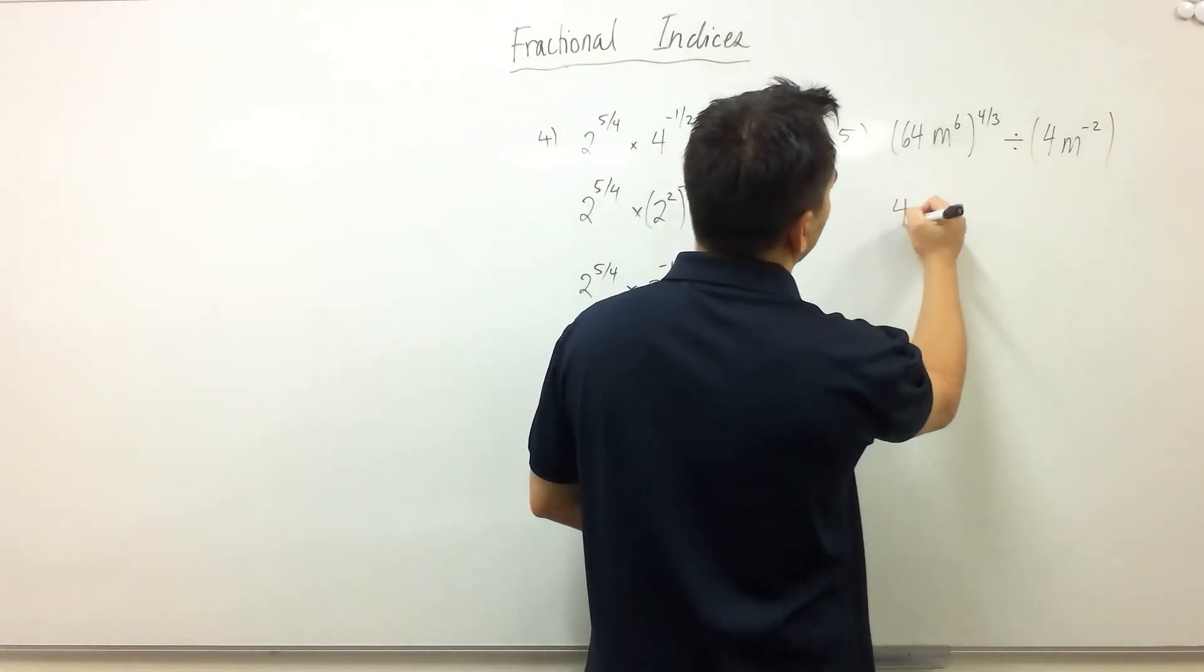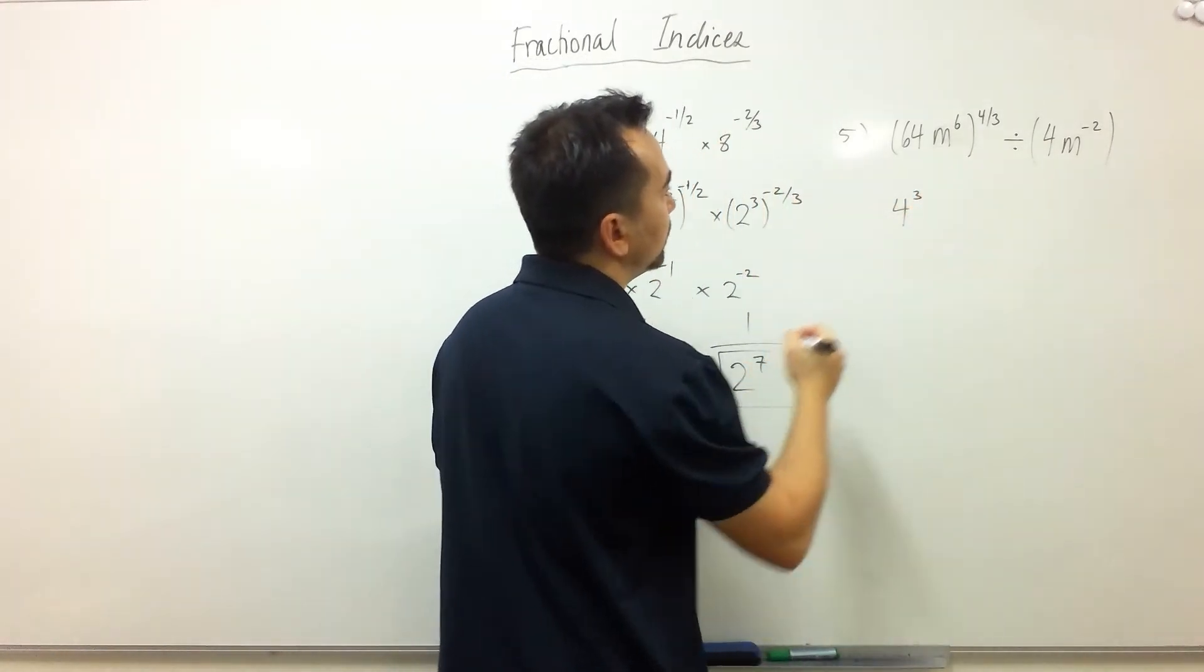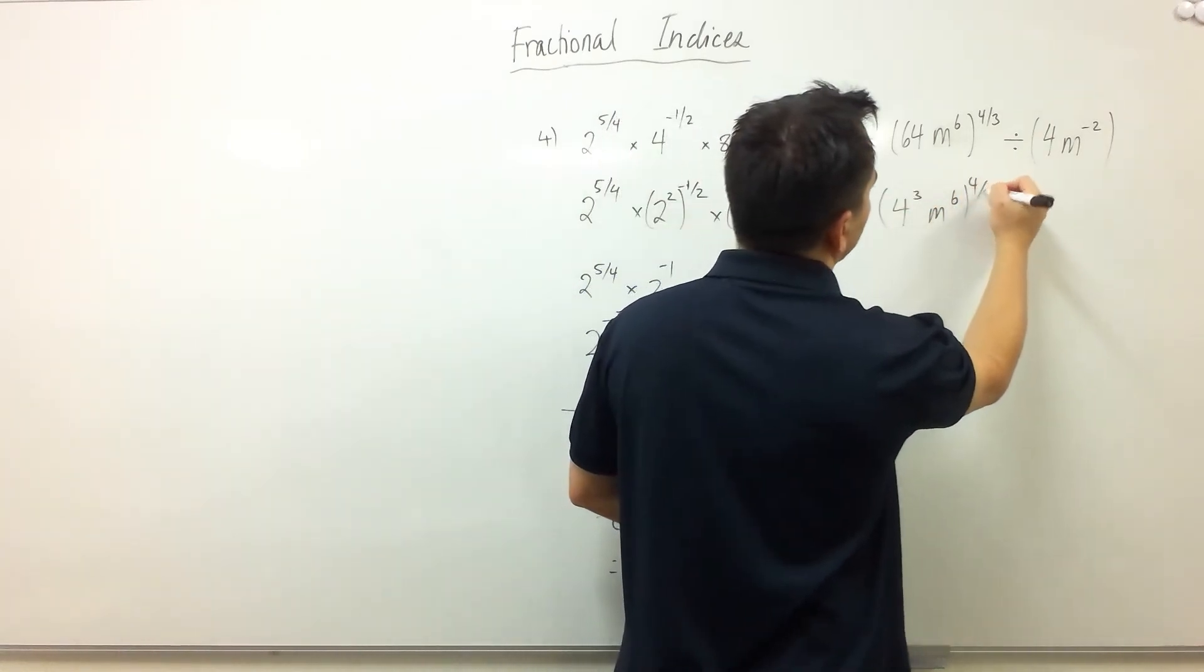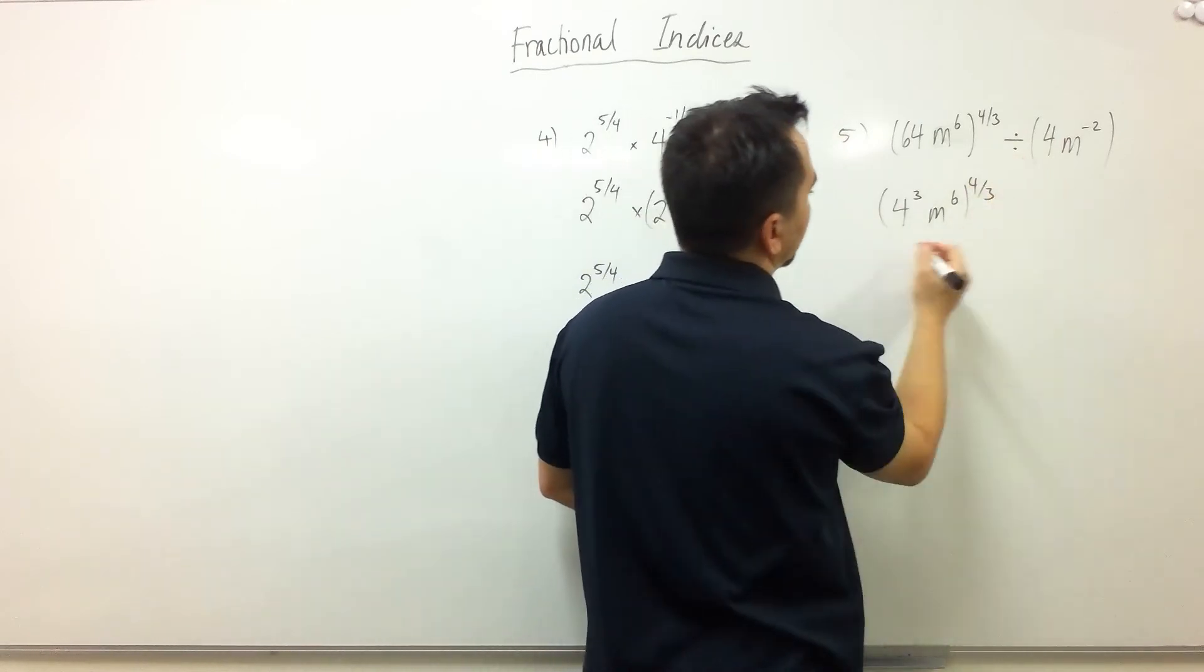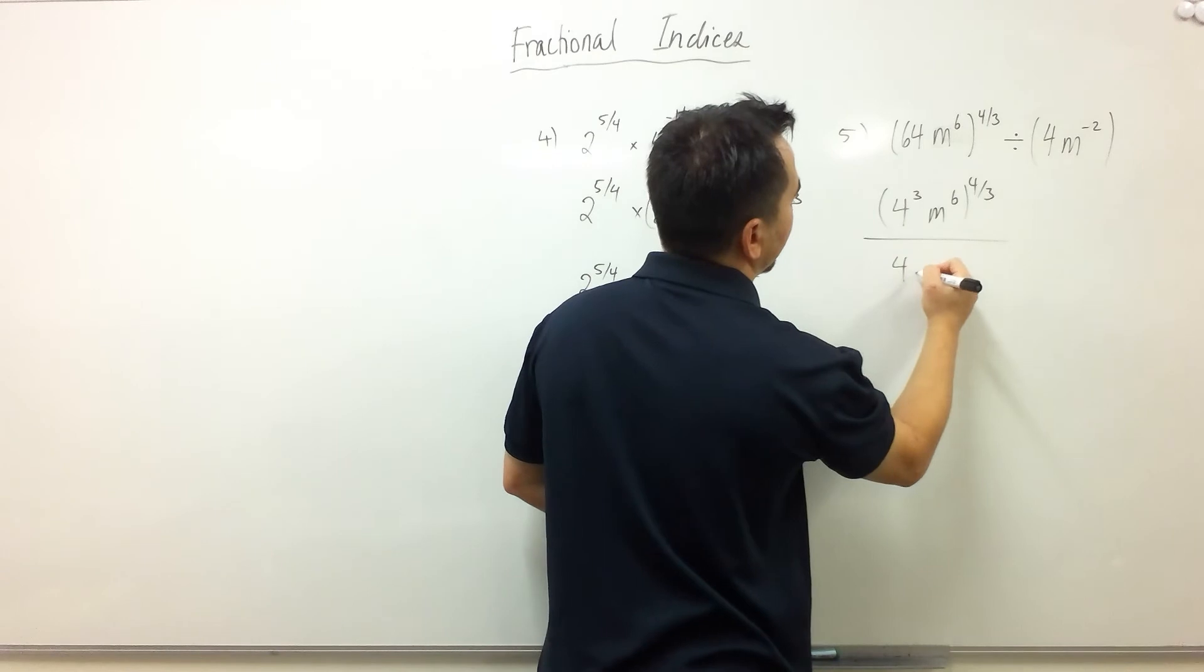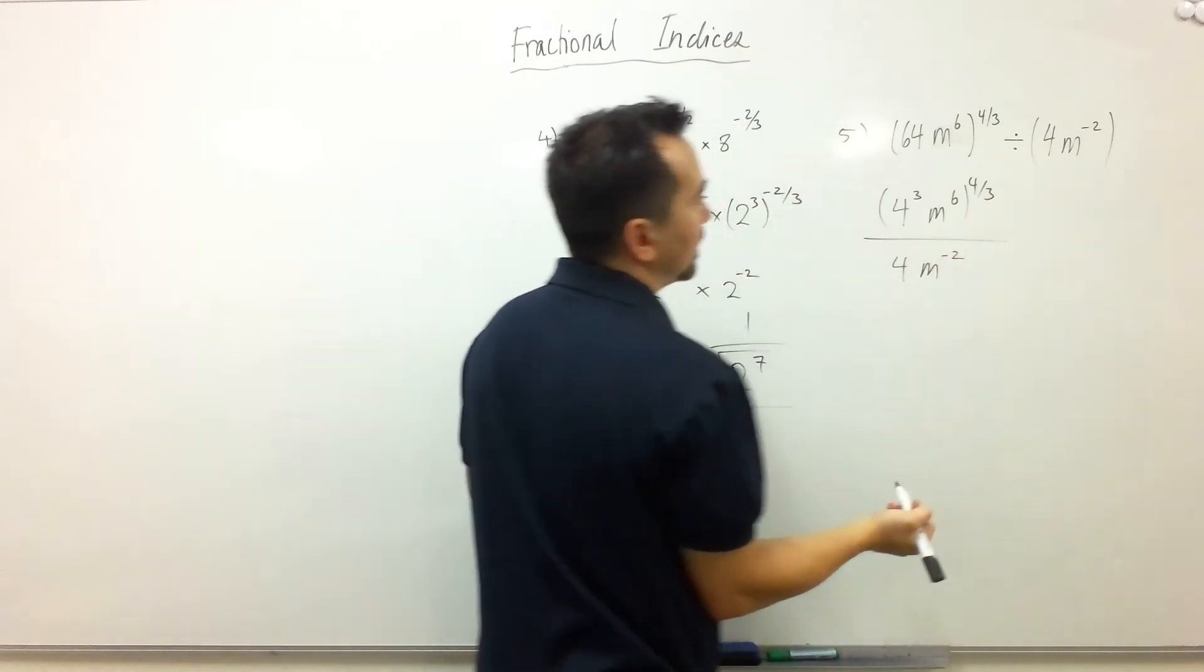Changing 64 into base 4, we have all of this to the power of 4 thirds. And this divider means I'm going to move all of this underneath. So we have 4 to the power negative 2.